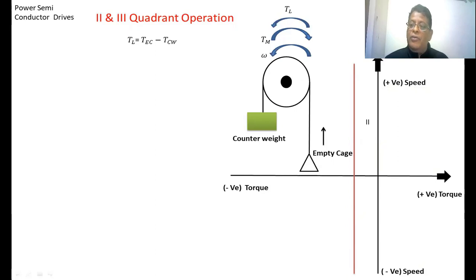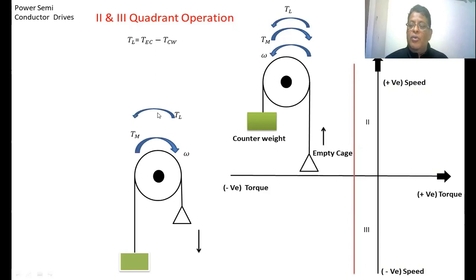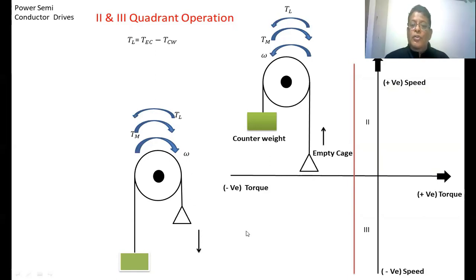For the case where both torque and speed are negative — power becomes positive — the motor takes power from the supply and runs in the opposite direction. This applies when the empty case moves from the upper level to the lower level. The load torque direction remains unchanged, the motor torque opposes the load torque, and the motor drives the drum in the appropriate direction so the empty case moves downward. These are the four quadrant operations of the hoist.